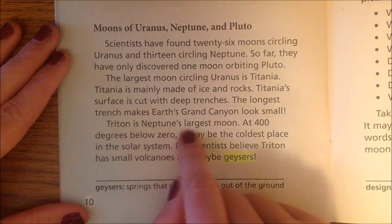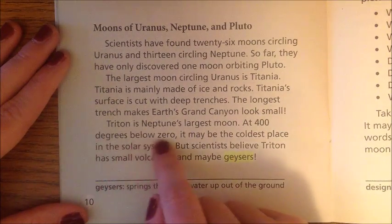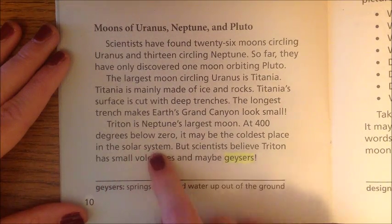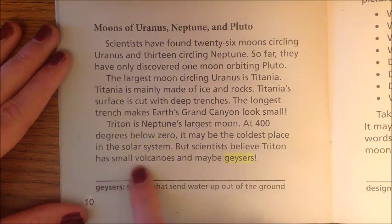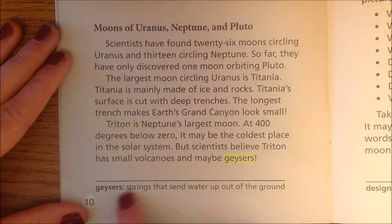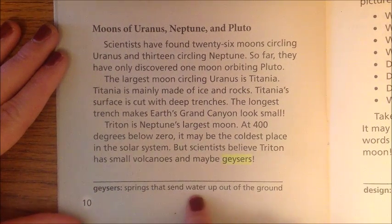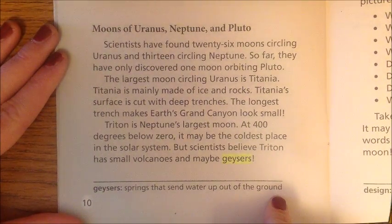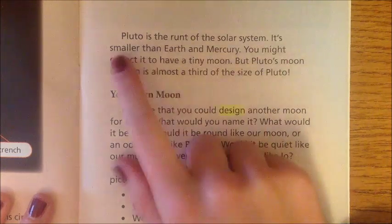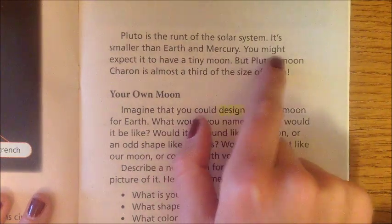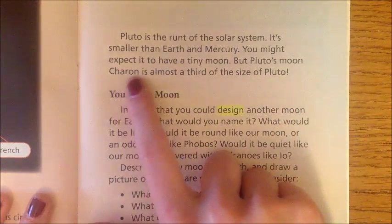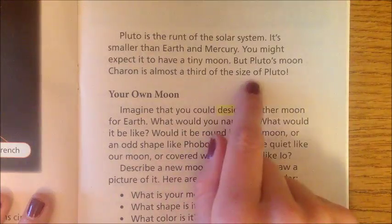Triton is Neptune's largest moon. At 400 degrees below zero, it may be the coldest place in the solar system, but scientists believe Triton has small volcanoes and maybe geysers — springs that send water up out of the ground. Pluto is the runt of the solar system, smaller than Earth and Mercury. Its moon, Charon, is almost a third of the size of Pluto.